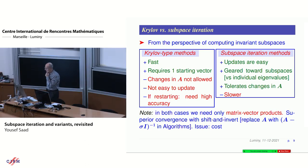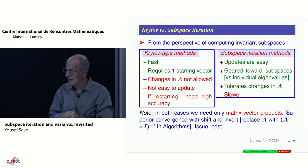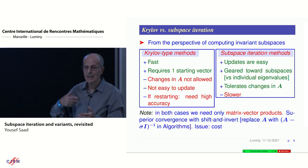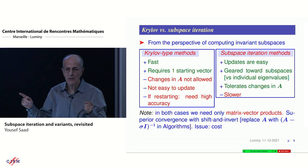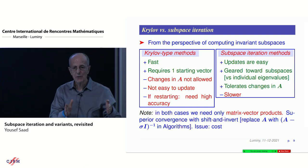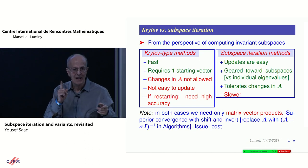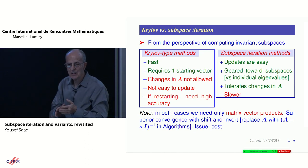People have a preference for Krylov methods in general, but in this context, there are advantages and disadvantages to both methods. Krylov subspace methods are fast, they require only one starting vector. But it's very difficult to make something work when A changes. It's not easy to update. This is actually something we encountered when looking at electronic structure calculations where you have this self-consistent loop.